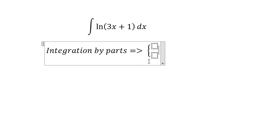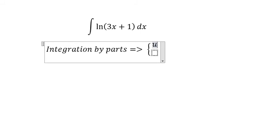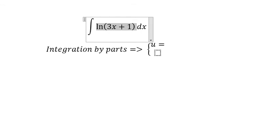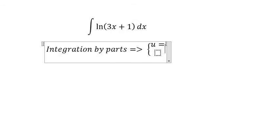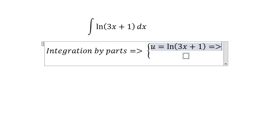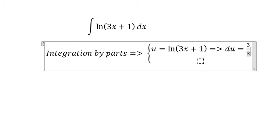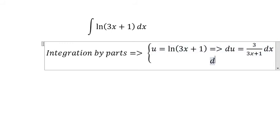We have u equals ln(3x+1), so du equals 3/(3x+1)dx. And dv equals dx, so we get v equals x.